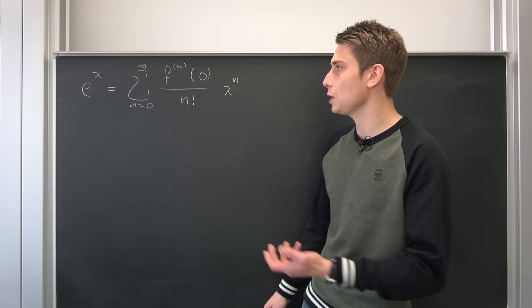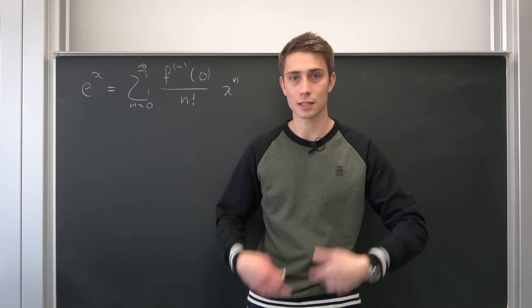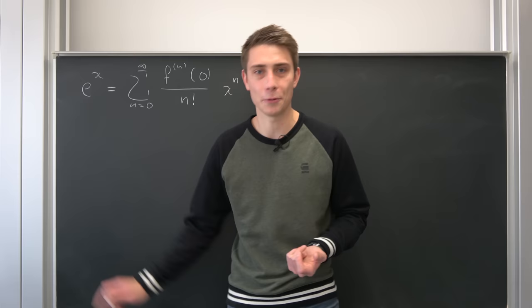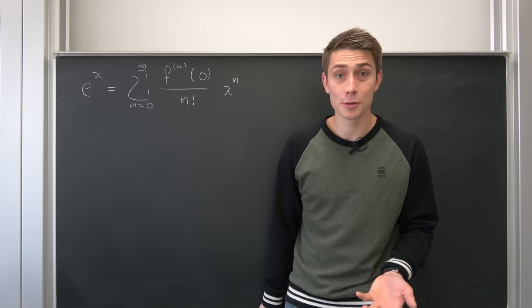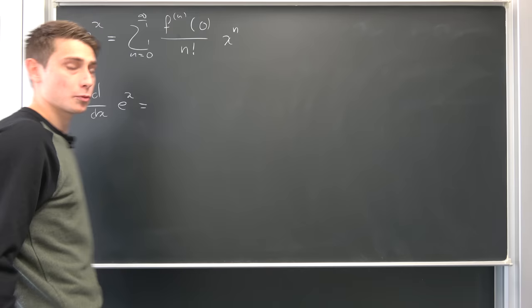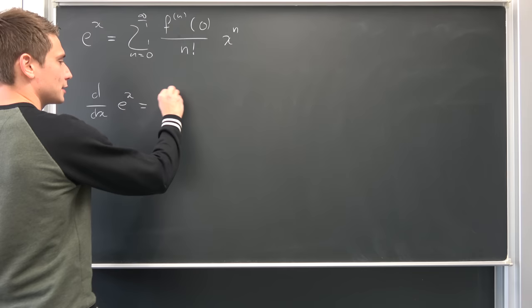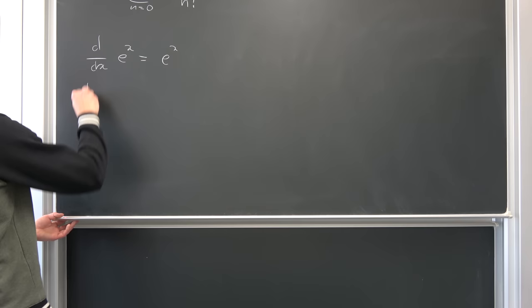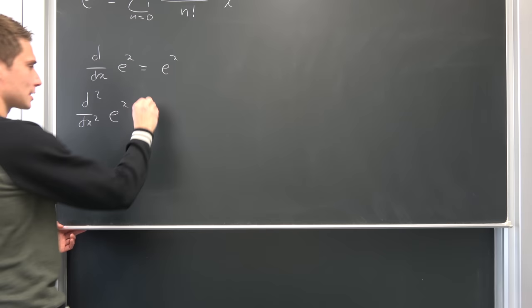And the only hard thing to find out is really how our function is going to act when differentiated infinitely many times and then being evaluated at the point zero. But luckily, we are dealing with the exponential function. So what's the first derivative of the exponential function? Well, d dx of e to the x by one of its many definitions, for example as a differential equation, is just e to the x.